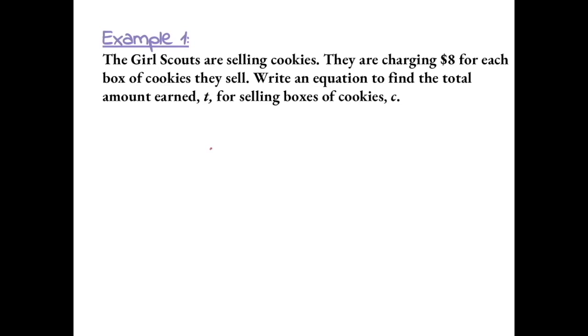So we want to find the total amount, t, based on how many boxes of cookies they sell. If the boxes cost $8 each, then they make $8 times the number of boxes that they sell. Because we don't know the number of boxes, we write that as $8 times c, where c is the number of boxes.